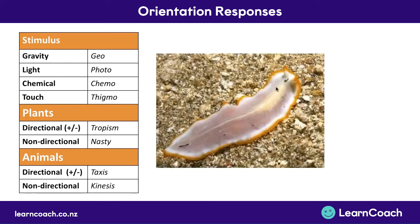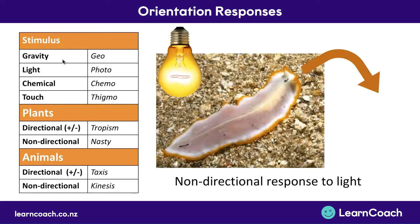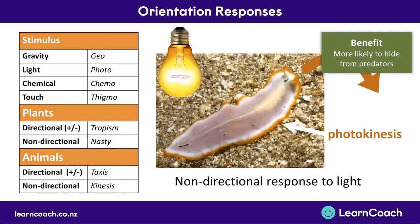Similarly, if you look at a flatworm and turn on the light, it starts turning around in 90-degree angles — not necessarily towards or away from the light, just turning at 90 degrees repeatedly. This is a non-directional response to light as well, so it's also photo kinesis — no positive or negative. The benefit is the same: they want to hide from predators when the light goes on, and whether they find a rock closer or further from the light doesn't matter — they just want to find somewhere to hide quickly.